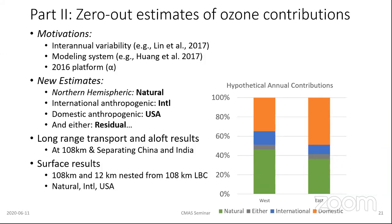I'll show some results and we're going to think about long-range transport both in terms of surface concentrations and also aloft. When we're at the larger scales like 108-kilometer, we have more zero-outs to look at — we can look specifically at China and India separately from all other countries. But when we're looking at the surface results at 12-kilometer nested down from 108-kilometer, we'll just have the natural, international, and USA categories.